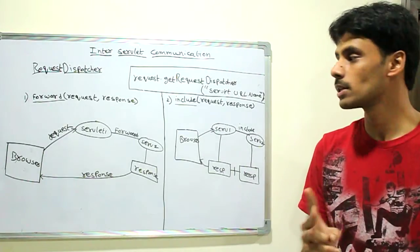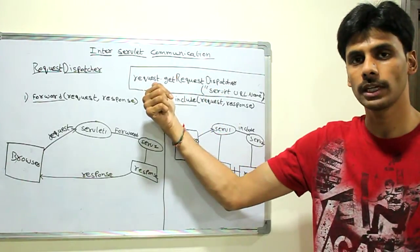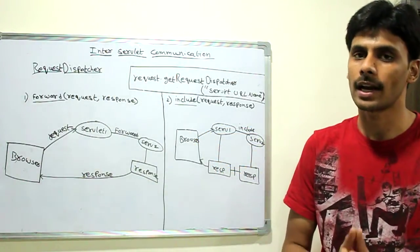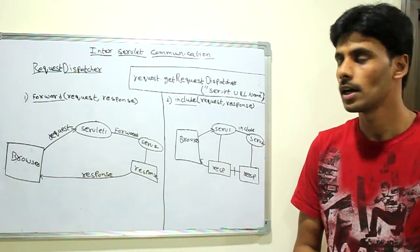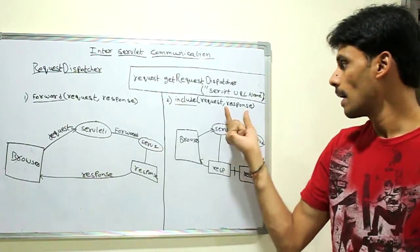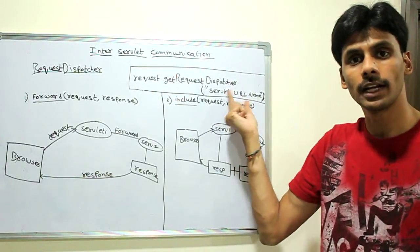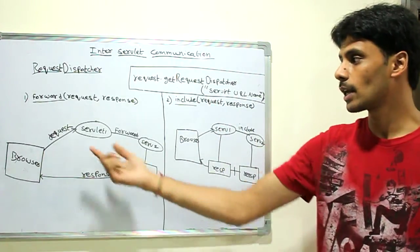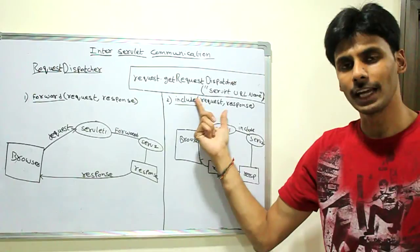Mainly you have two steps. Getting the request dispatcher out of the request object. The implementation for this is provided by the web container like Tomcat, Weblogic, or WebSphere. So you retrieve the request dispatcher, pass in the URL pattern that you have in your web.xml to the getRequestDispatcher method, and then you either call the forward or include.